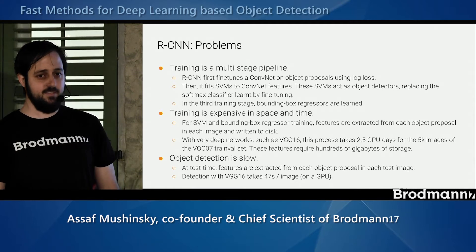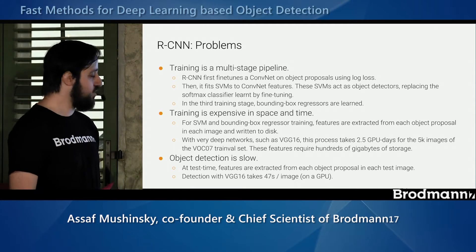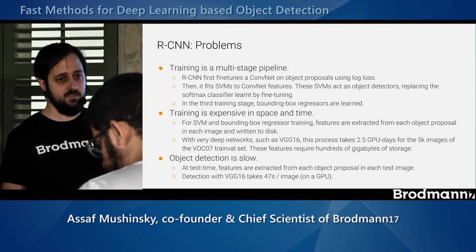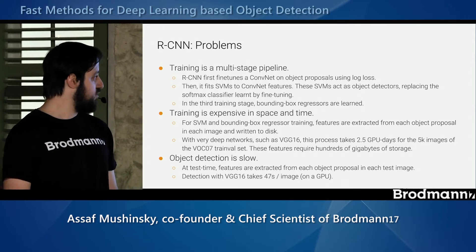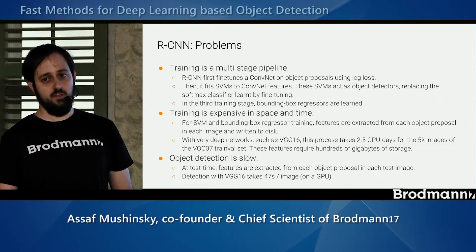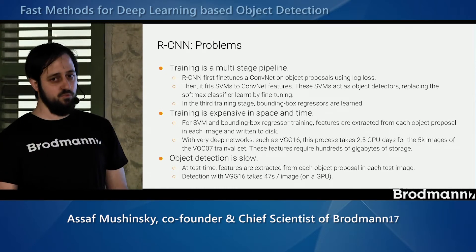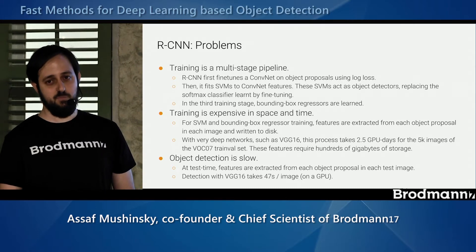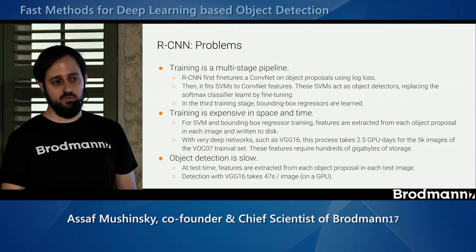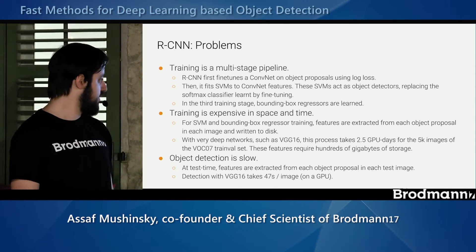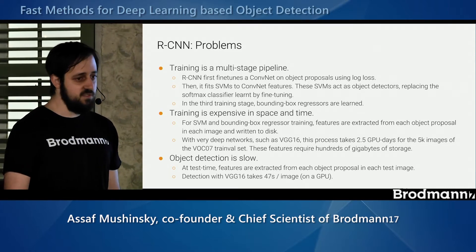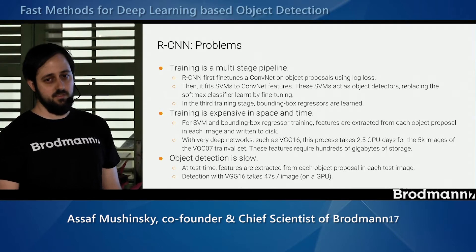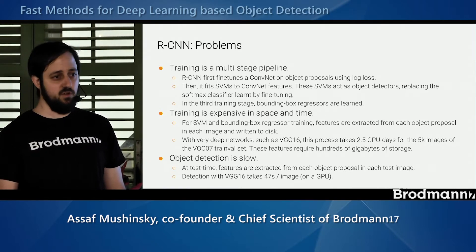RCNN has several problems. The first is that it's a multi-stage pipeline — the training is very complex and takes a lot of time. The second is that it consumes a lot of storage space. Even then, it takes almost two and a half days of GPU time, and even after all of these problems, what we end up with takes 47 seconds per image just to run the classification part over the GPU.